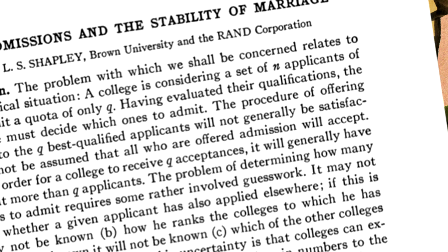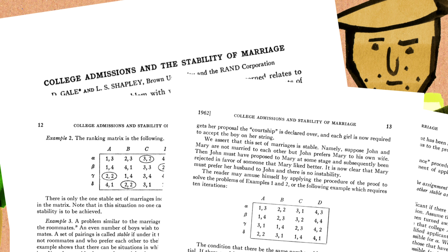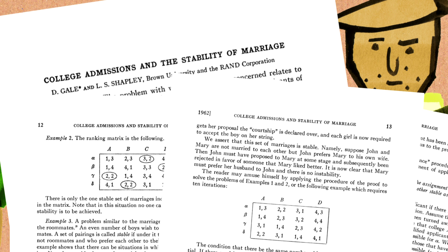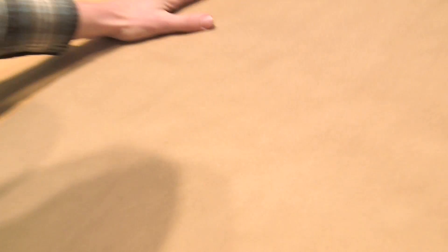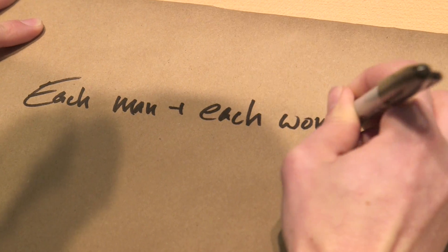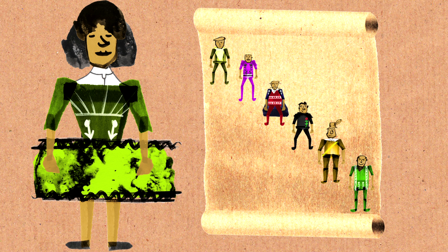The answer is yes, and the proof is constructive. There's an algorithm due to David Gale and Lloyd Shapley in a 1962 paper on college admissions and the stability of marriage that proves this can always be done. I'd like to describe that algorithm to you now. This is an algorithm you can program a computer to run, but I like to describe it via a metaphor where the men and women are playing certain roles.